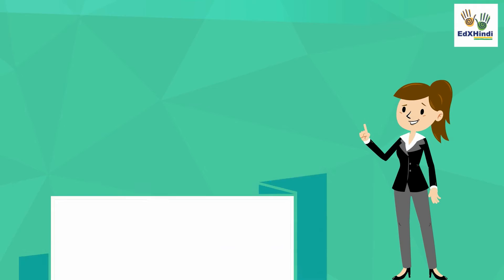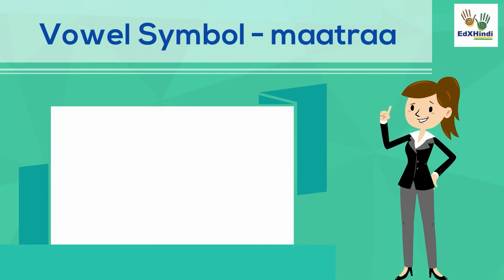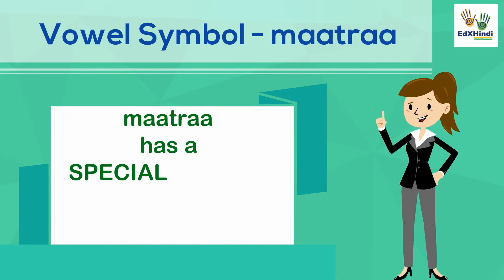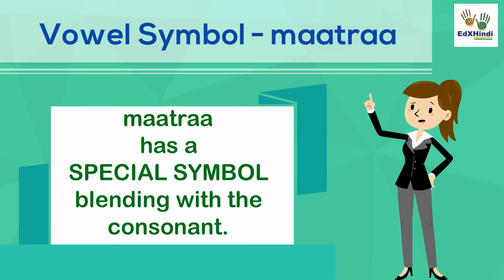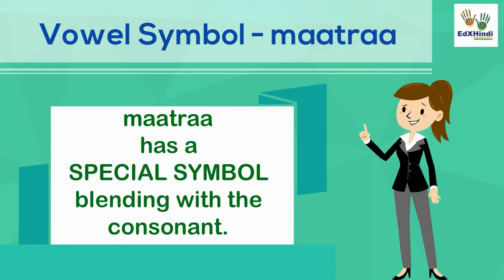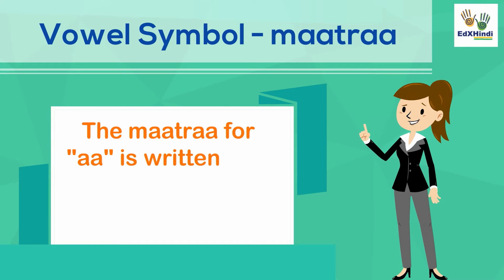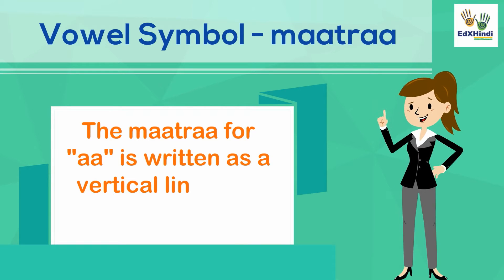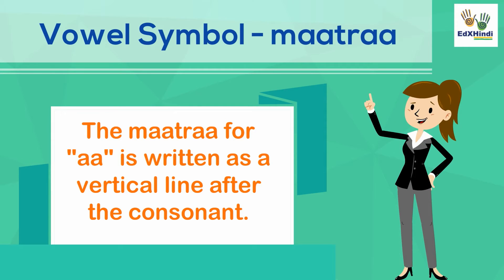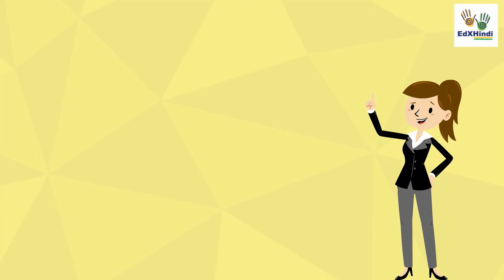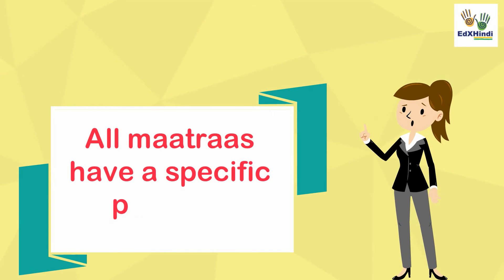A vowel symbol is called matra in Hindi. All the vowels have a special symbol that blends with the consonants. The matra for ah is written as a vertical line placed after the consonant.